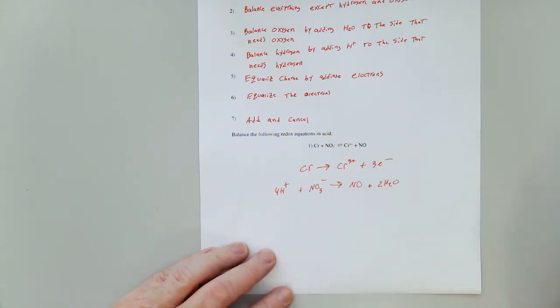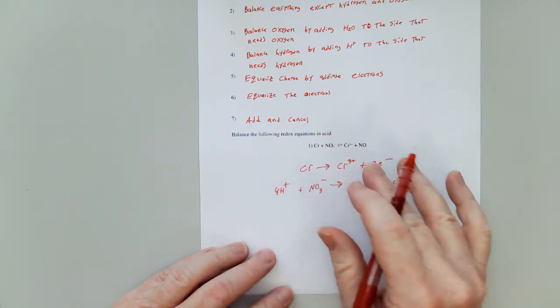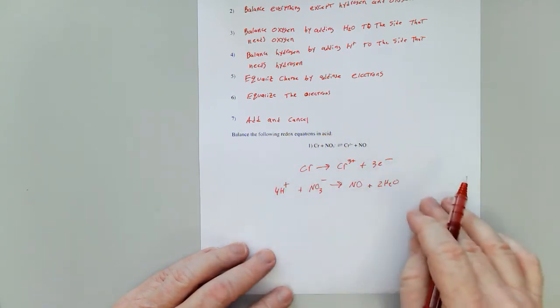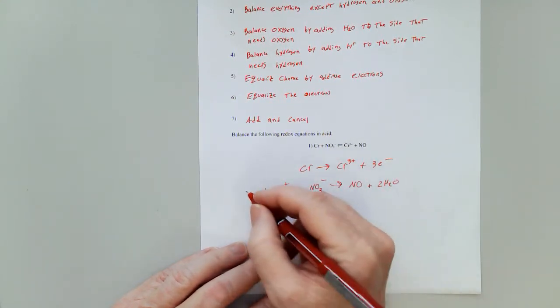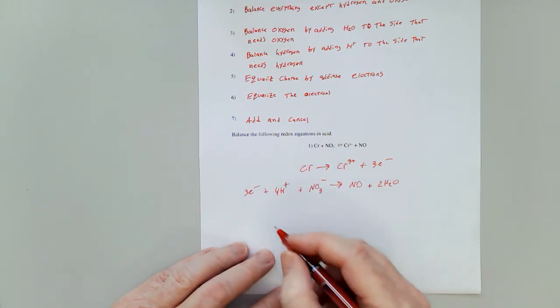Now, let's balance the charge. Well, actually, I already did in that first half reaction because that was the only thing involved was the metal and the electrons. But in this next one, I don't have any charge over here on the right side. Over here, I've got a four plus and a one minus. I need three more minuses. So I'll add three electrons.